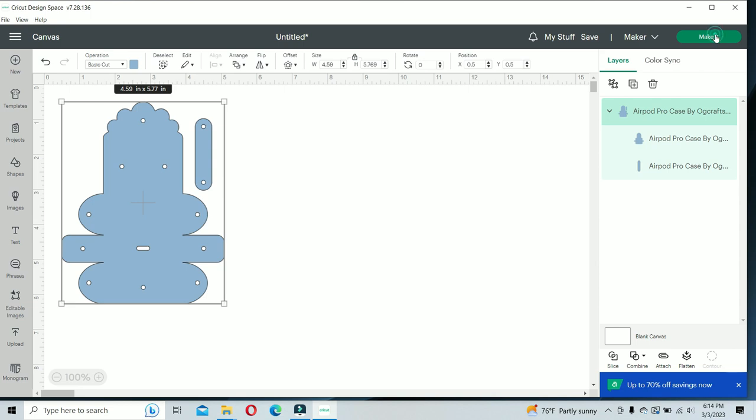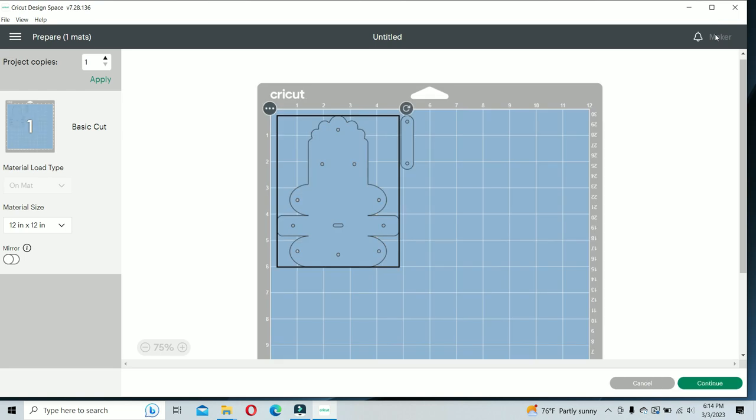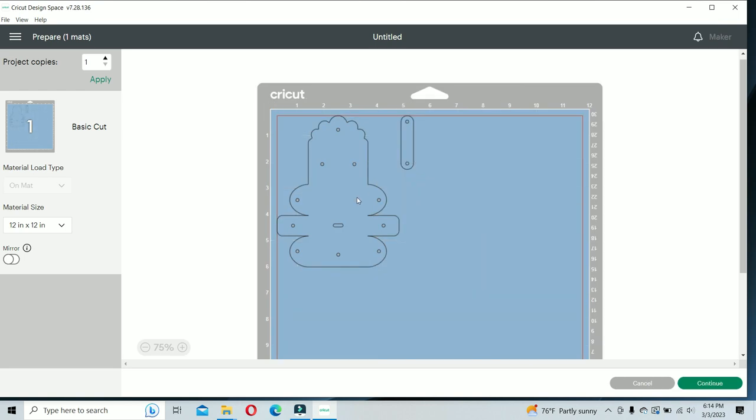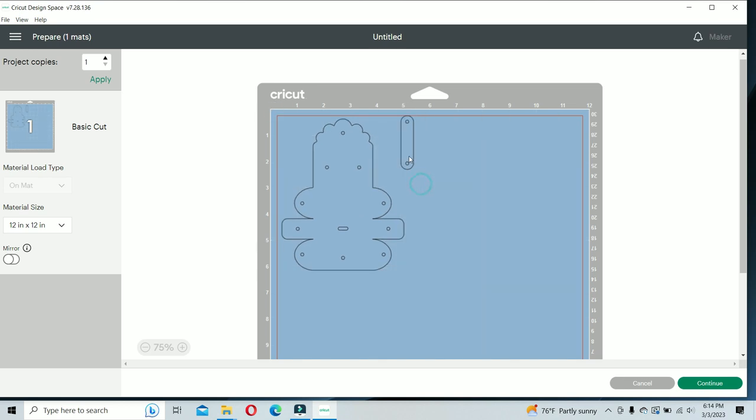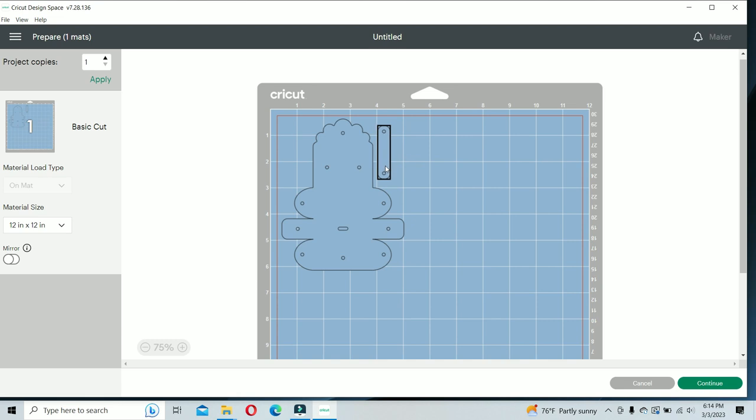Now let's make it. Go to the top right, click on make it. I'm going to move this over just a bit. I'm also going to move this over a bit to save some room on my faux leather. Now we're ready. I'm going to go to the bottom right, click on continue.